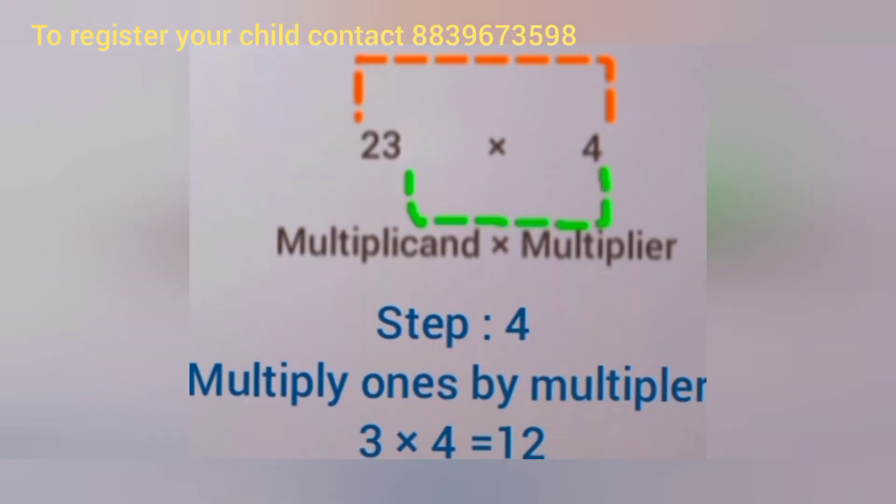Similarly, we have to multiply ones by the multiplier. That is 3 × 4. We get answer 12. Here we don't need to double the digit because the answer is already double digit.